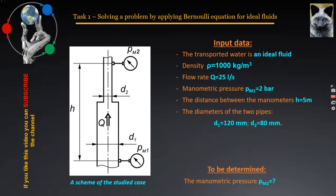Now, about the output data. It is specified that the transported fluid, in this case cold water, is considered as ideal. The water density is 1000 kg per cubic meter. The flow rate at which the water flow is transported through the pipe is 25 liters per second. The manometric pressure measured in pipe 1 is PM1 equal to 2 bars. The height is h equal to 5 meters. The two pipes diameters are D1 equal to 120 mm and D2 equal to 80 mm respectively.